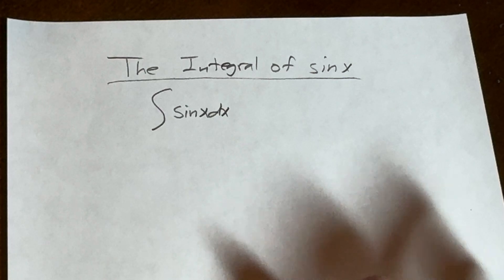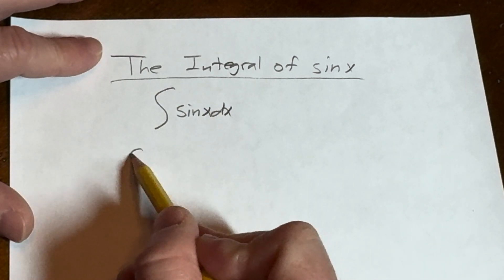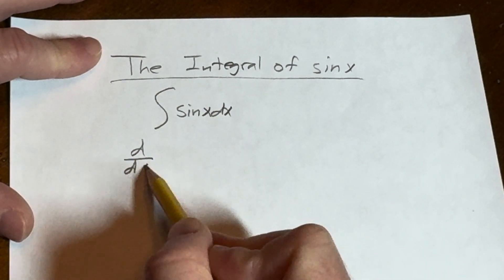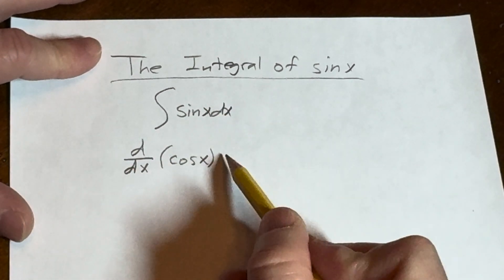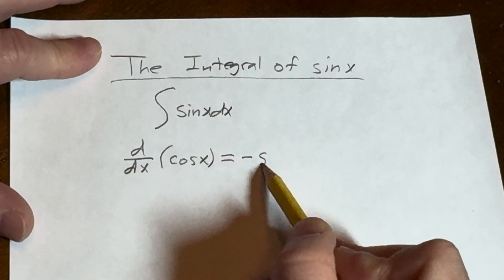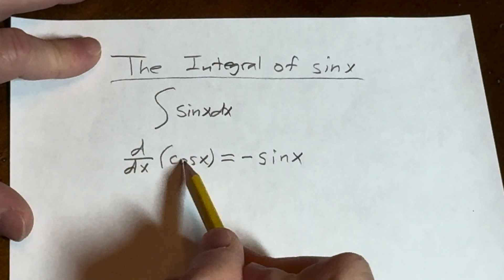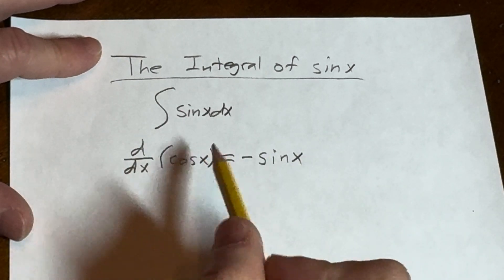So you say, OK, well, you know that if you take the derivative with respect to x of the cosine of x, that's going to be equal to negative sine of x. OK, so the derivative of cosine is equal to negative sine.